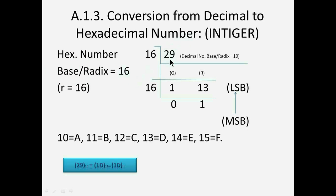Now let's convert decimal 29 into hexadecimal number. Here base or radix of 29 is 10.